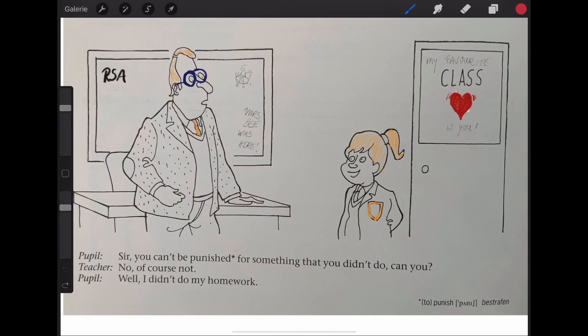I have a little cartoon here. You might like that. The pupil says. Sir you can't be punished for something that you didn't do. Can you? The teacher says. No of course not. Pupil answers. Well I didn't do my homework. Hmm. Anyway. It's a relative clause. And I'm sure you found the that here that explains something that you didn't do. I think it's quite funny.